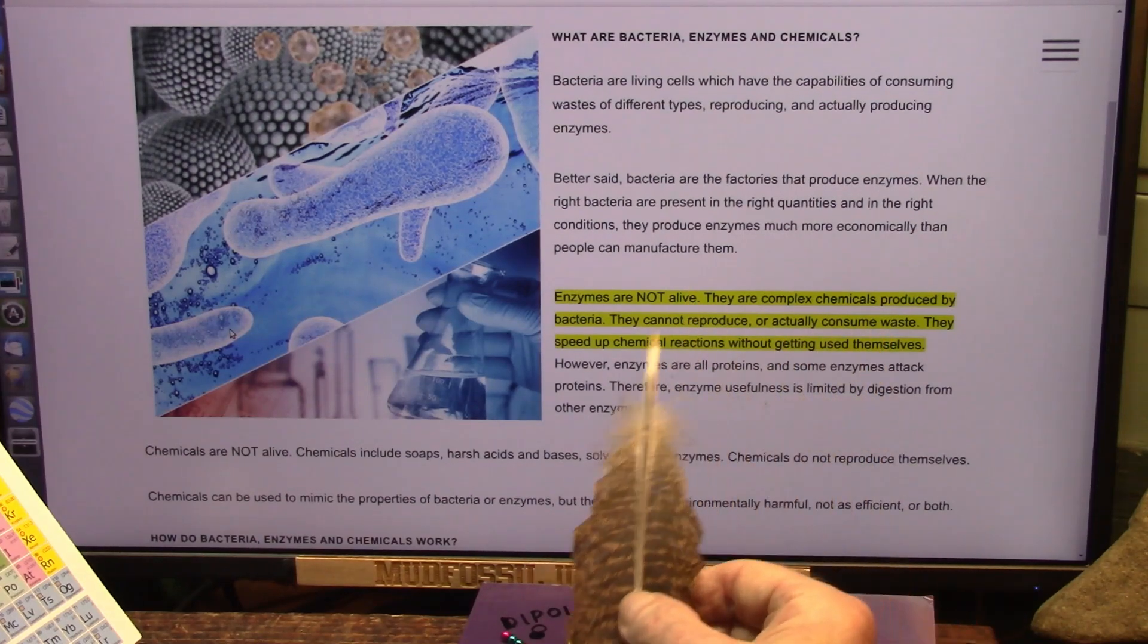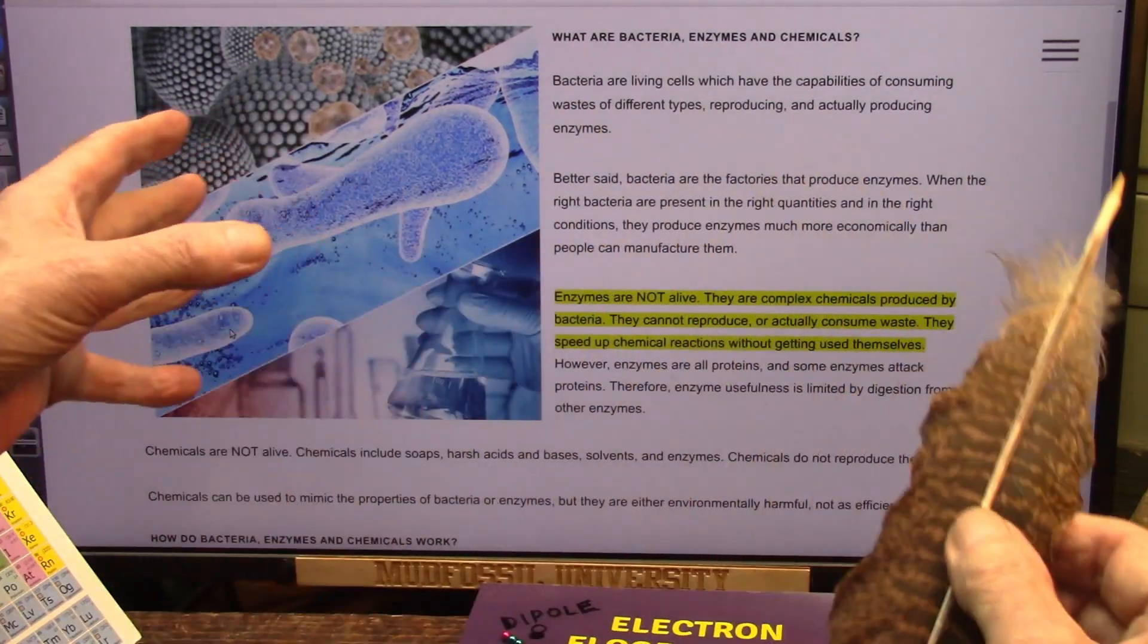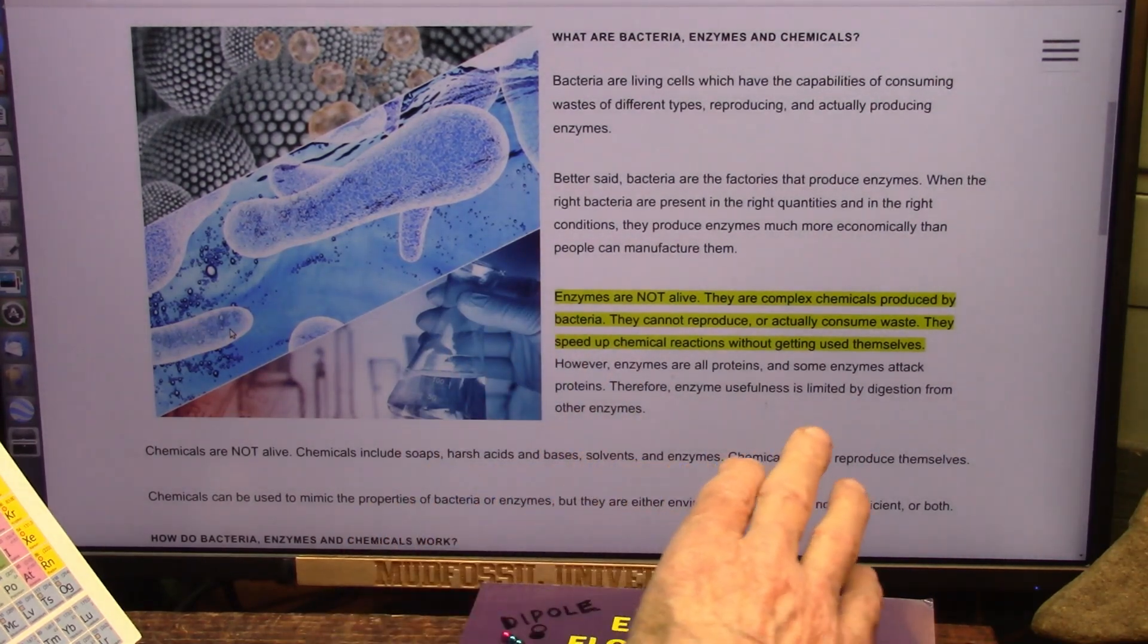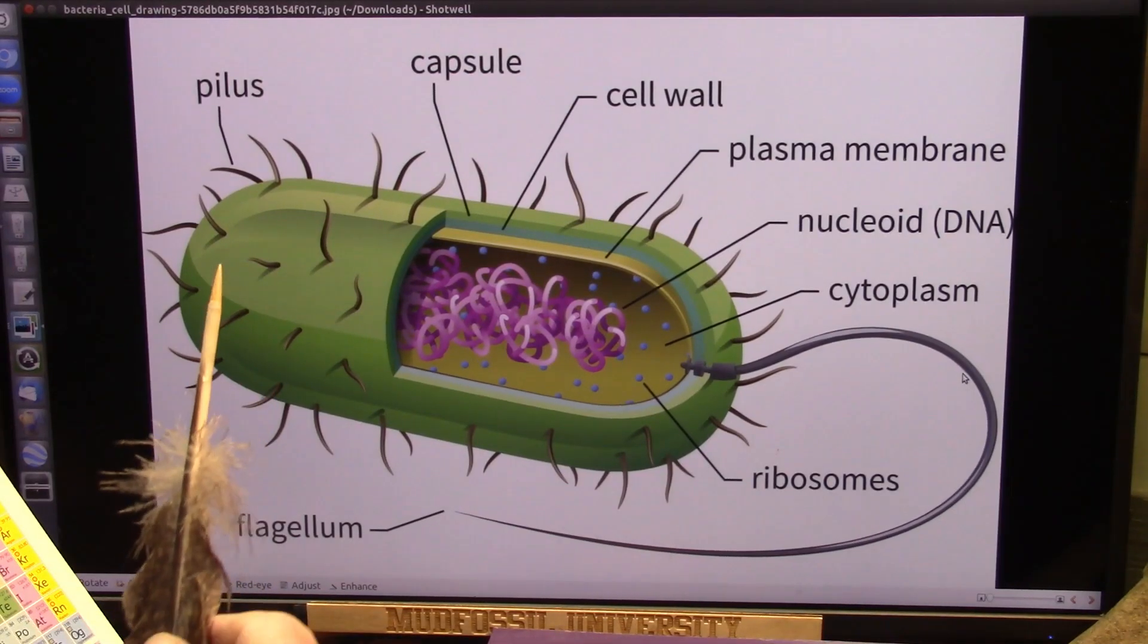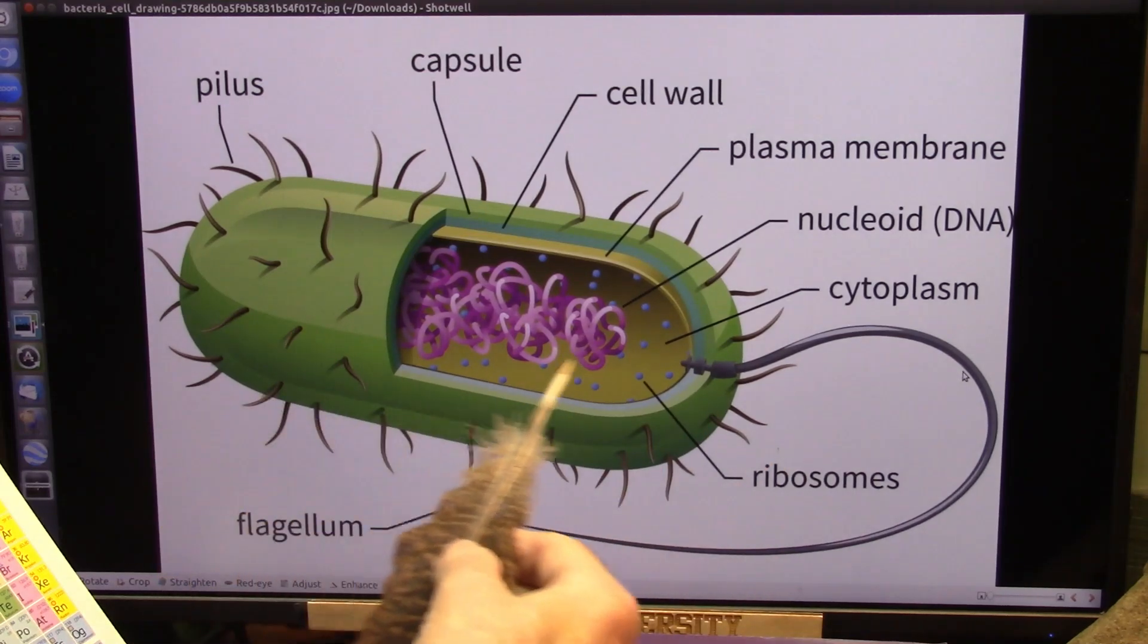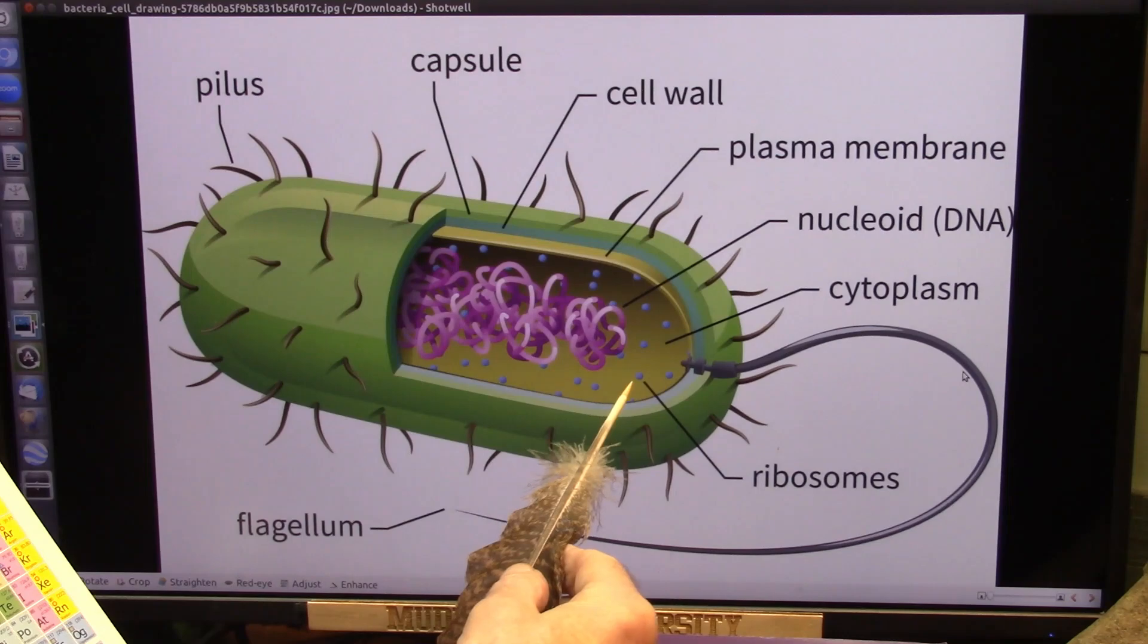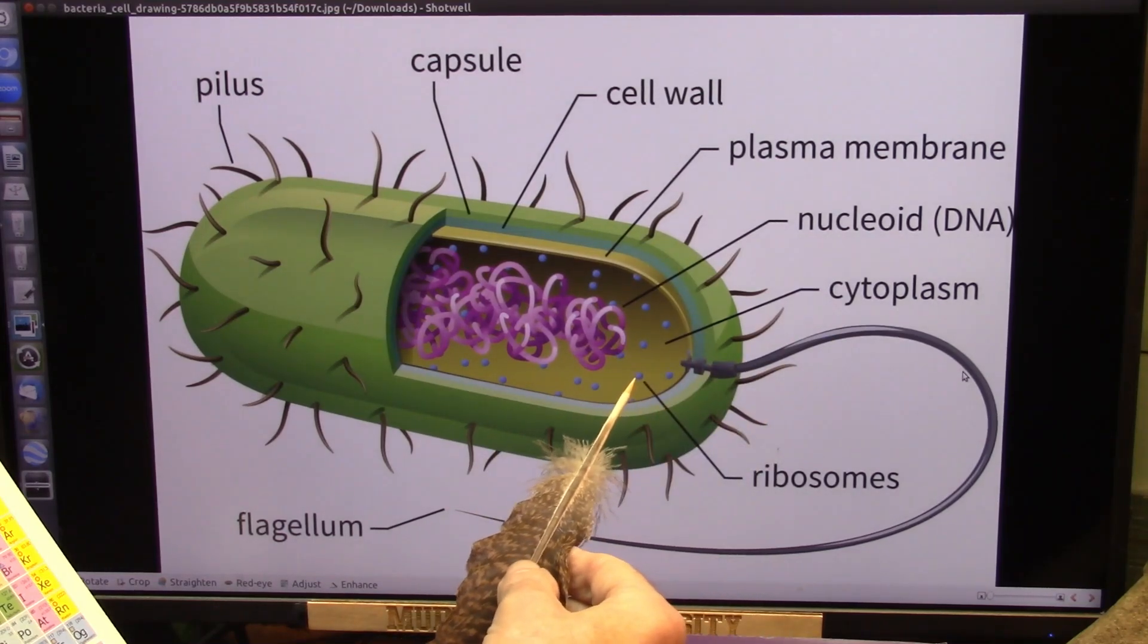Now enzymes are not alive. They're chemistry sets. They're complex chemicals produced by bacteria. Bacteria are the factories. They cannot reproduce. Once they're out and they're done their job and they're destroyed, that's the end of them. So you have to have more bacteria to make those. And they cannot consume waste either. They're chemistry sets. They speed up chemical reactions without getting used themselves. And after they've finished all of the chemical reactions that are needed to be done, they just get washed out of the system. Now enzymes can attack each other, so we have to understand digestion from other enzymes. This is a molecular battleground.